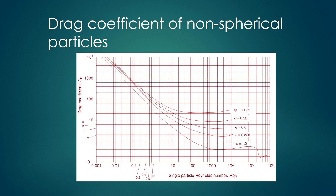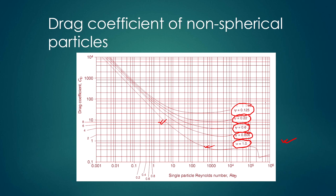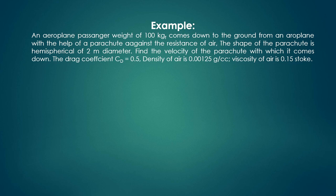For non-spherical particles, the drag coefficient can be obtained from a chart showing C_D versus Re for different sphericity values (ψ). If ψ = 1, the body is spherical. From this graph, you can read off the drag coefficient for different particle shapes and Reynolds numbers.